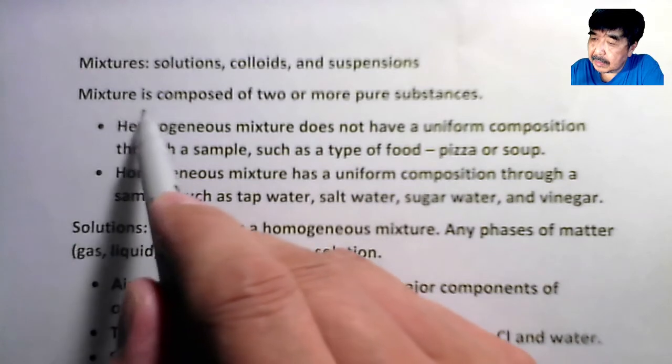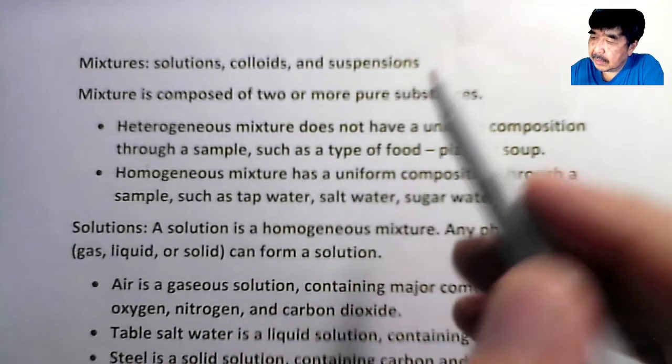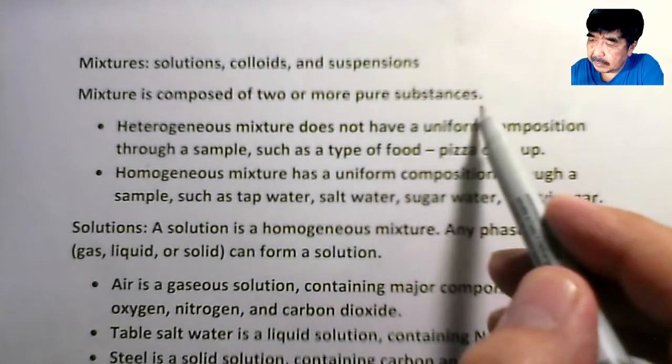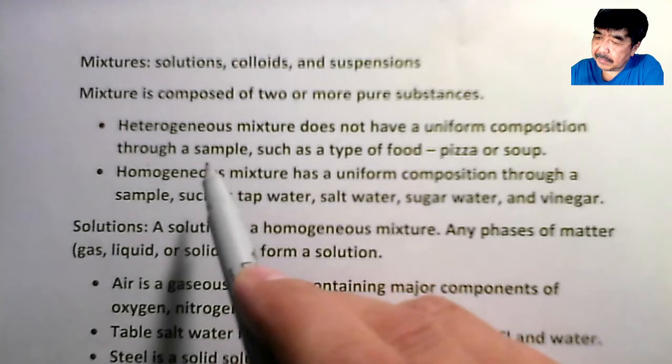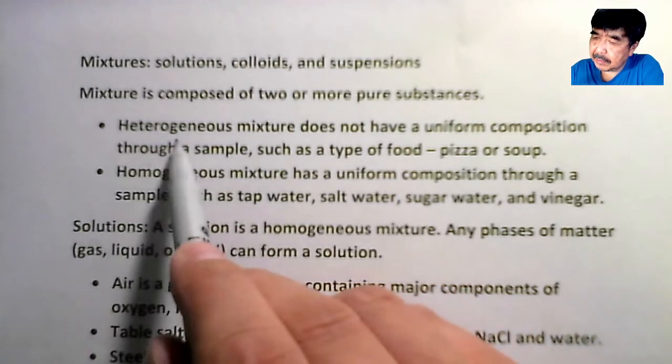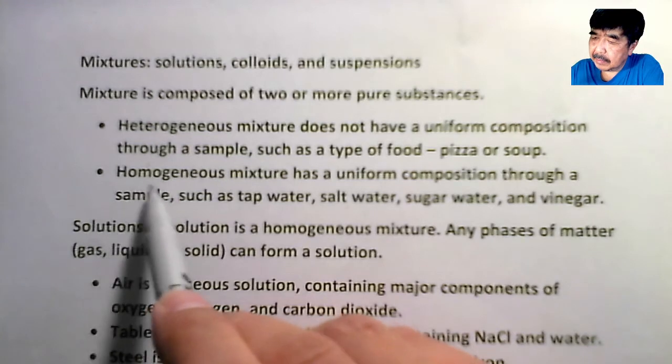Mixtures are composed of two or more pure substances. We have two types of mixtures. One is called heterogeneous mixture, another one is called a homogeneous mixture.